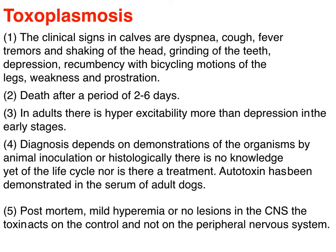Toxoplasmosis: clinical signs in young animals (foals) are dyspnea, cough, fever, tremors, shaking of the head, grinding of the teeth, with death after two to six days. In adults there is hyperexcitability more than depression in the early stage. Diagnosis depends on demonstration of the organism. Post-mortem shows mild hyperemia and no lesion in the center of the nervous system; toxin acts on the cortex and not on the peripheral nervous system.